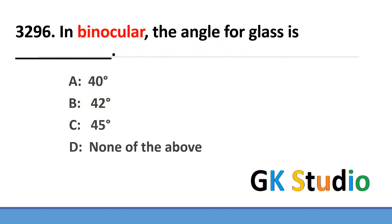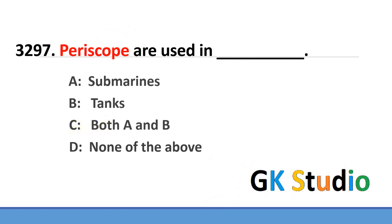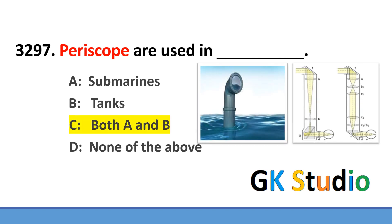In binoculars, the angle of the glass is 45 degrees. Periscopes are used in submarines and tanks.